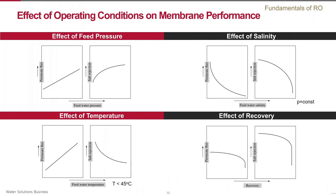For a system designer, it is very important to understand how major operating conditions such as feed salinity, temperature, pressure, and system recovery affect the membrane. Operating pressure directly affects water flux and indirectly affects salt rejection. Higher pressure results in higher flux. Salt transport is not directly affected by pressure, but because more water has passed through the membrane at higher pressure, the absolute salt concentration in the permeate is lower — so it appears as if salt passage decreases and salt rejection increases as pressure increases.